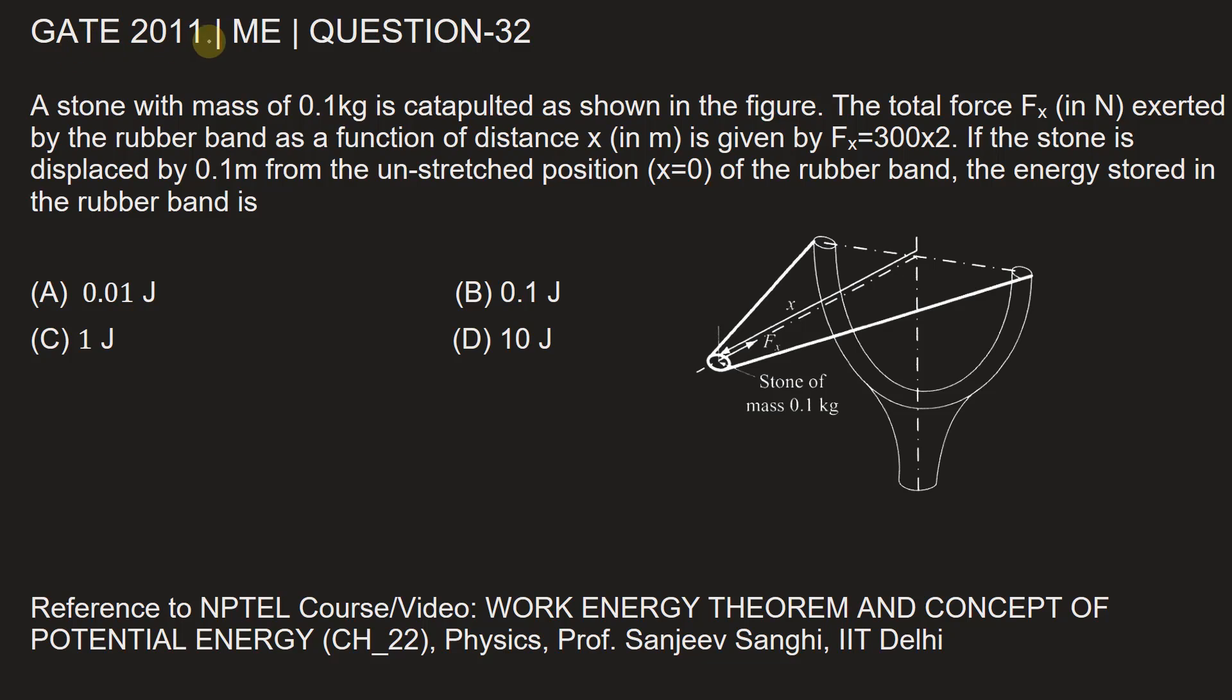This question is from the 2011 Mechanical Engineering paper, question number 32. A stone with mass of 0.1 kg is catapulted as shown in the figure. The total force Fx in newtons exerted by the rubber band as a function of distance x in meters is given by Fx = 300x². If the stone is displaced by 0.1 meter from the unstretched position, which is x = 0, of the rubber band, the energy stored in the rubber band is: